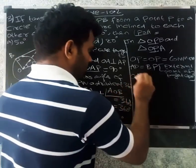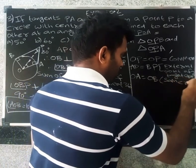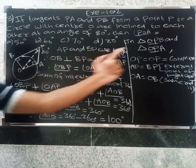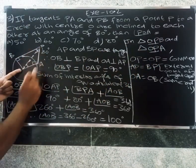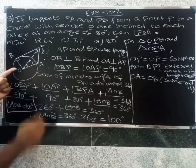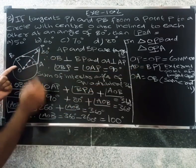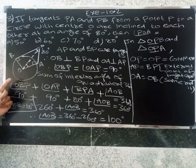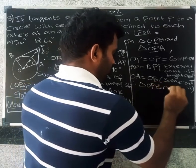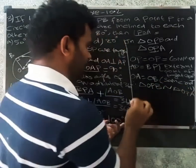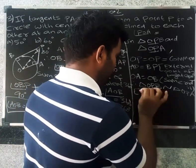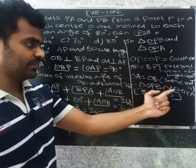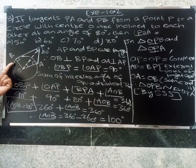OA equals OB as radii. Therefore triangle OPB is similar to triangle OPA by SSS — side equal to side equal to side. So by the SSS theorem, triangle OPB is similar to triangle OPA.